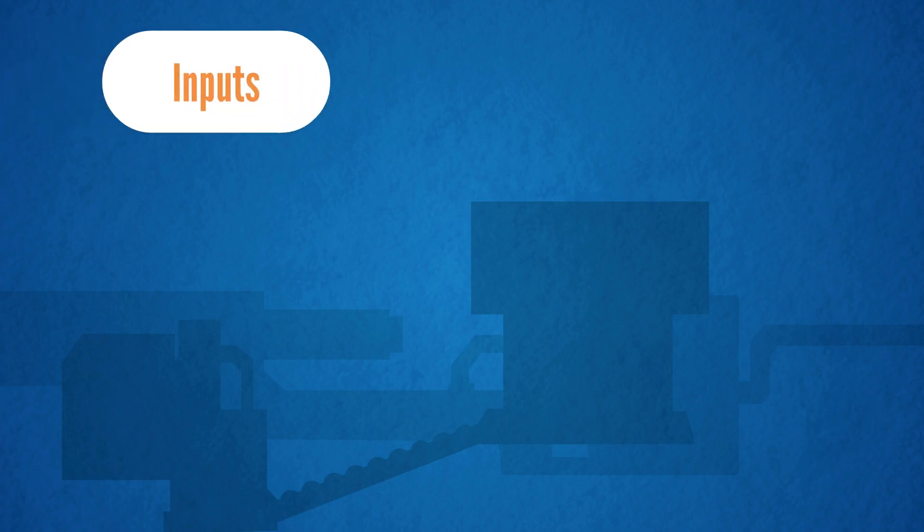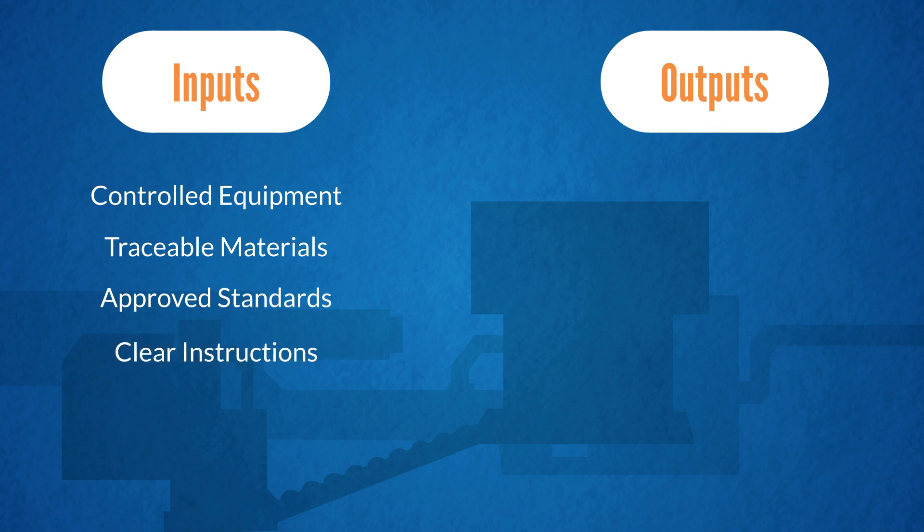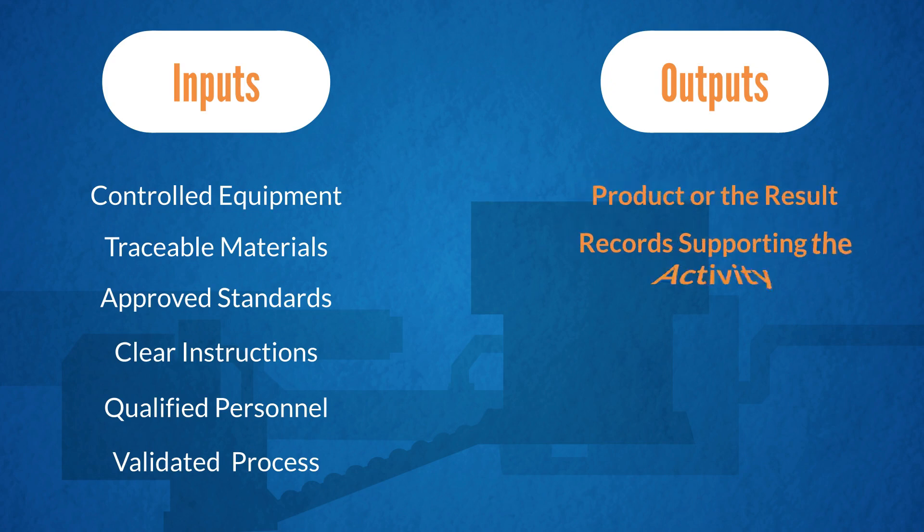But within the pharmaceutical industry, we have structures and systems that enable the output to always be the same. We have controlled equipment, material, standards. We have very clear written instructions with capable people that have been trained fully, and we have a process which is tested, validated, to ensure that it is always the same. Within that structure, we are able to deliver two outputs for every task that we do. There's the output for which we are ultimately paid—the product or a test result—and then there's the records that support that activity. And it's with these records that we're interested in the quality of the data.